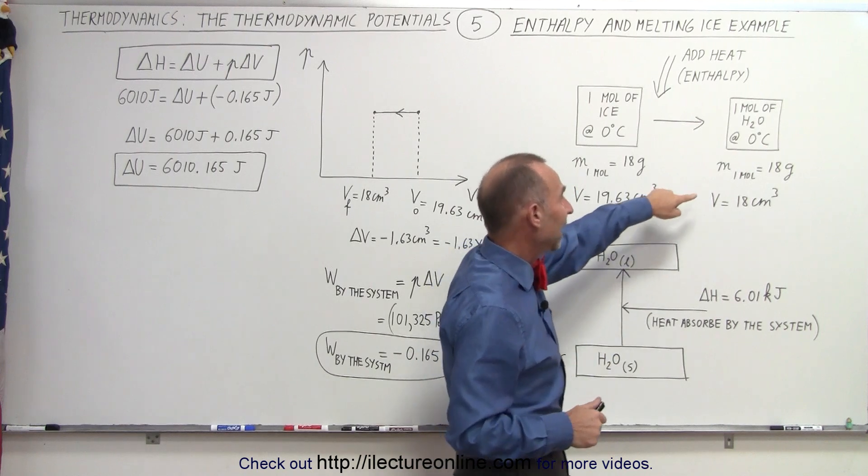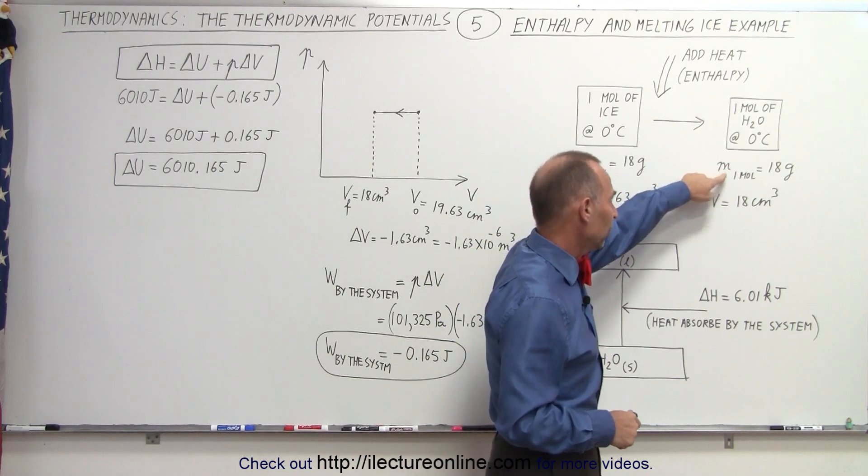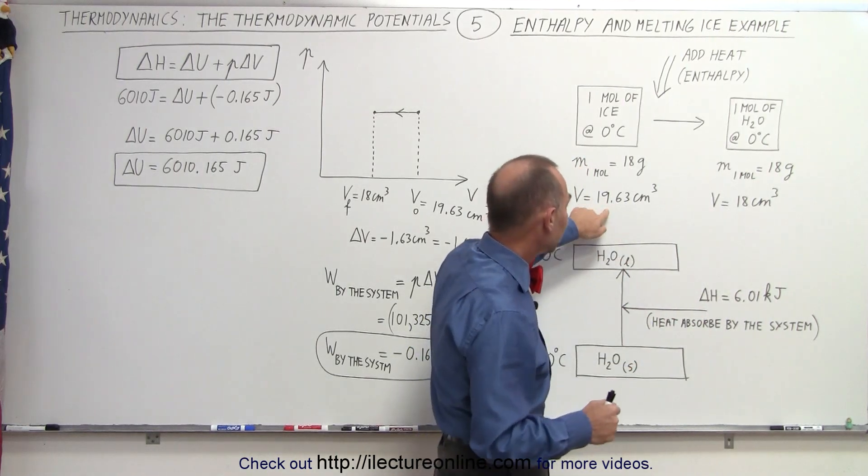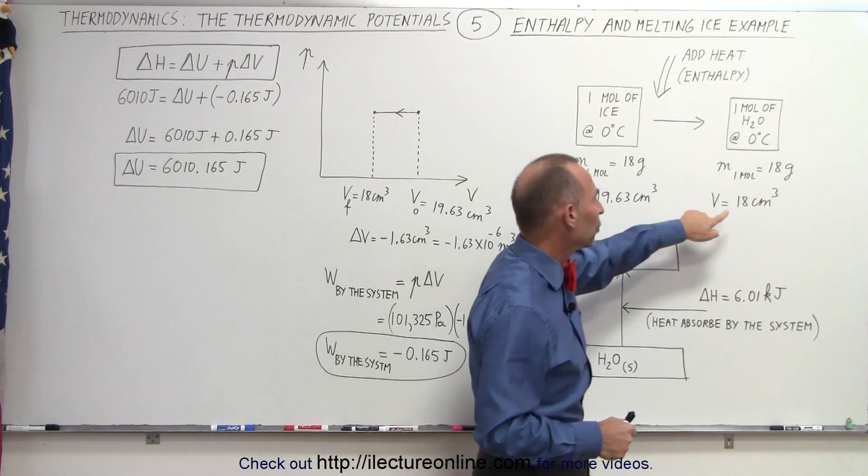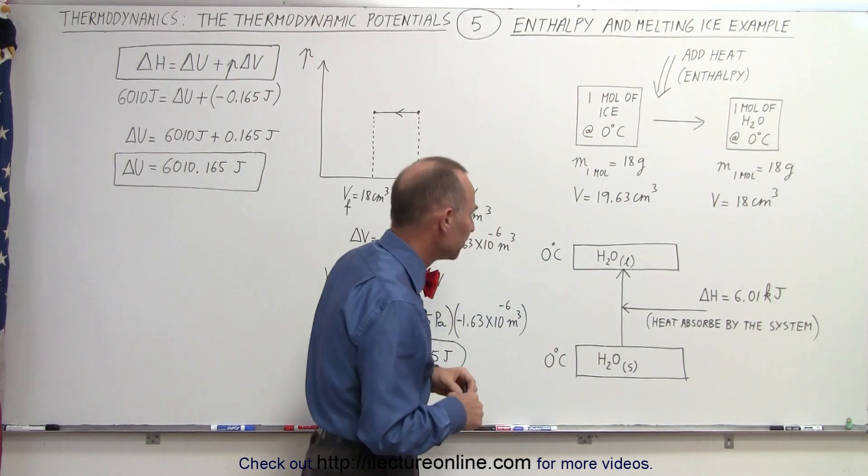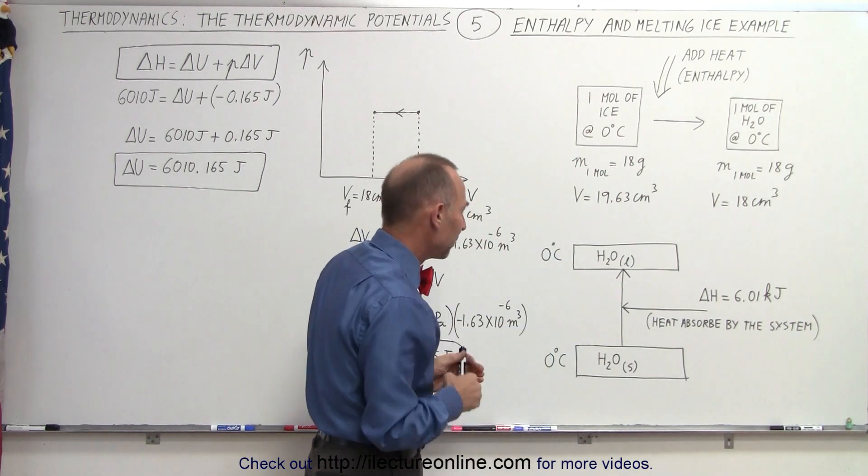Of course, now we need to put it in a container, and we still have one mole of the substance, so we still have 18 grams, but now the volume has shrunk from 19.63 cubic centimeters to 18 cubic centimeters, so the change in volume is actually a negative change.